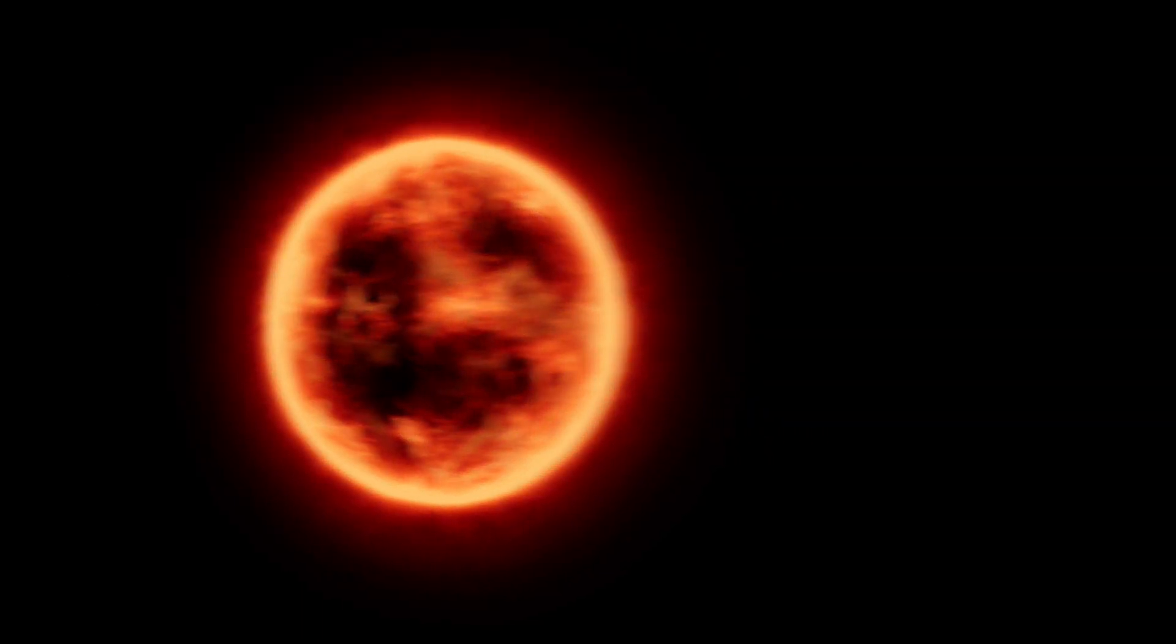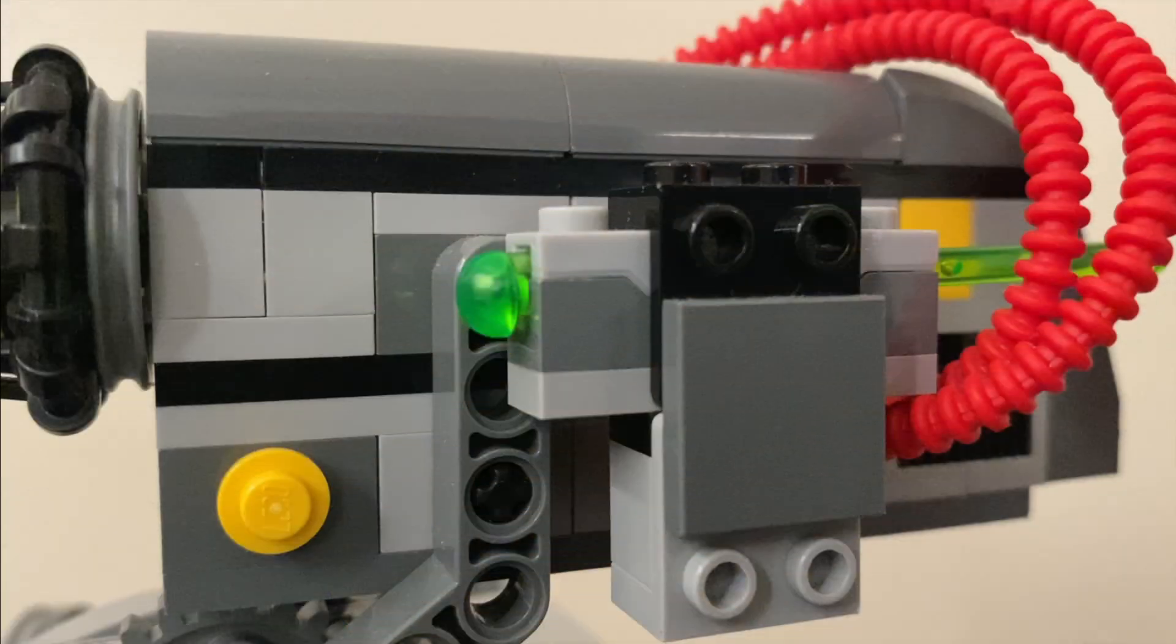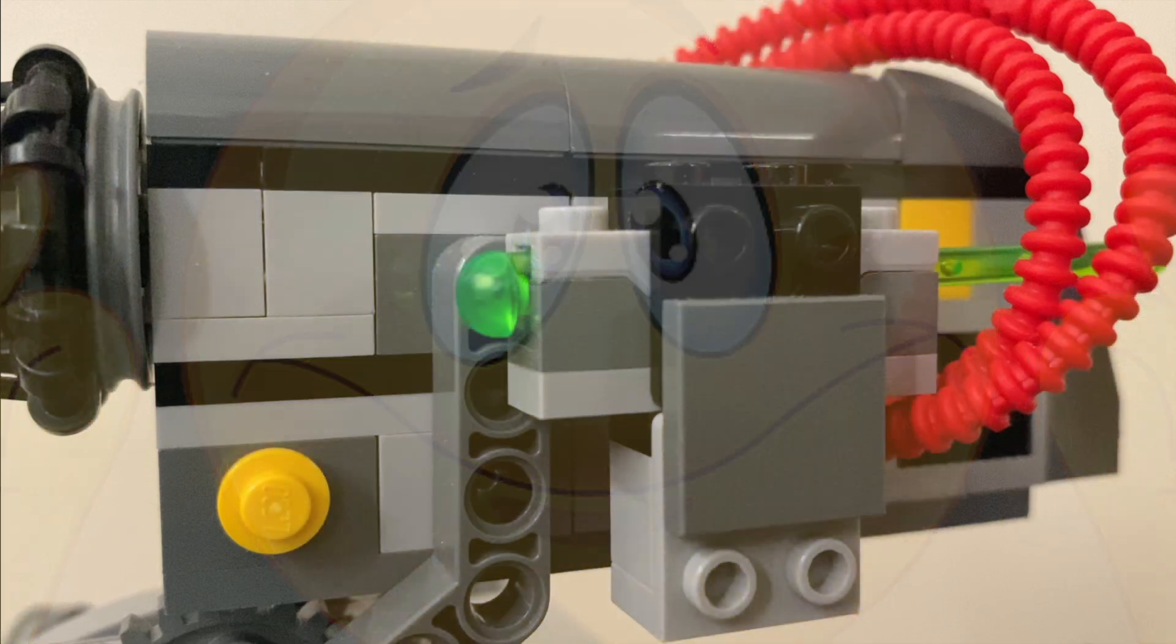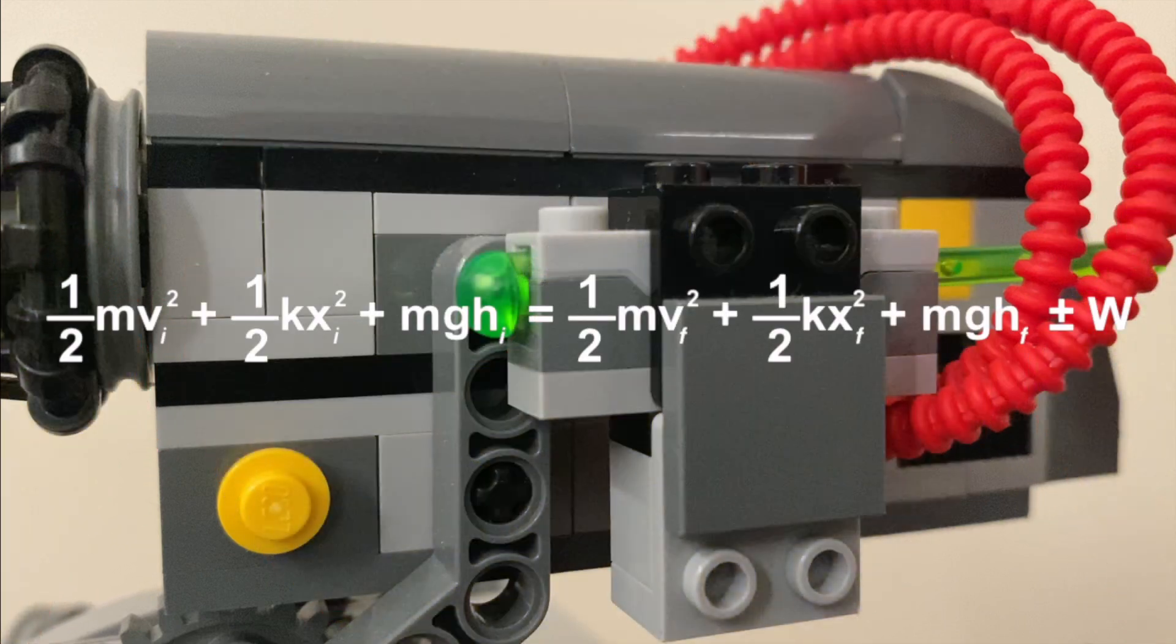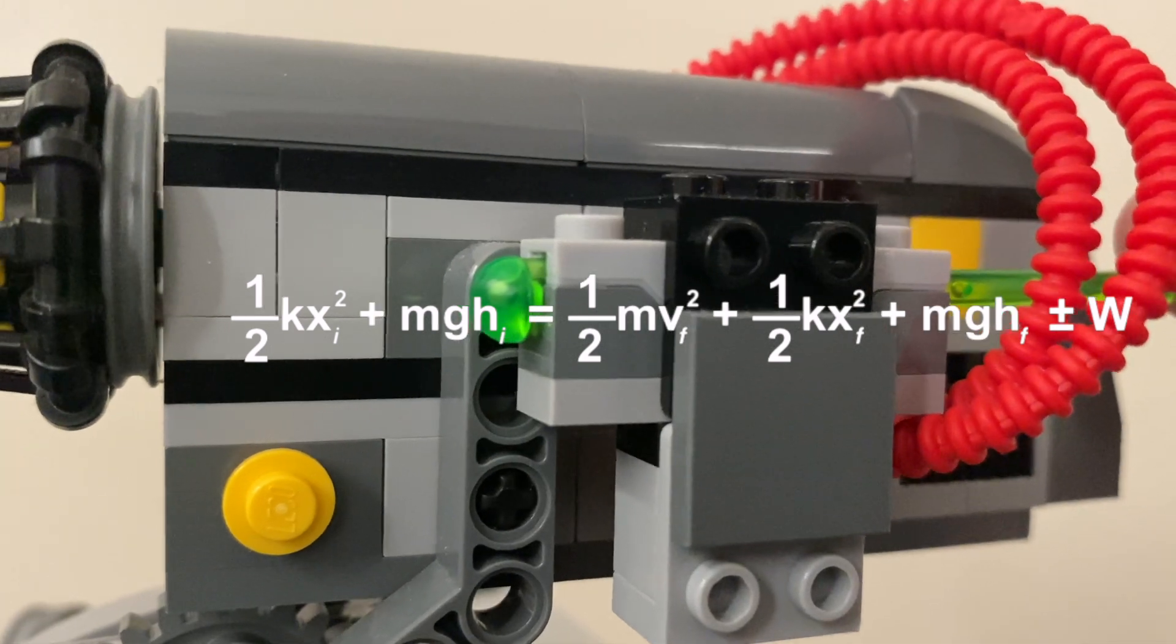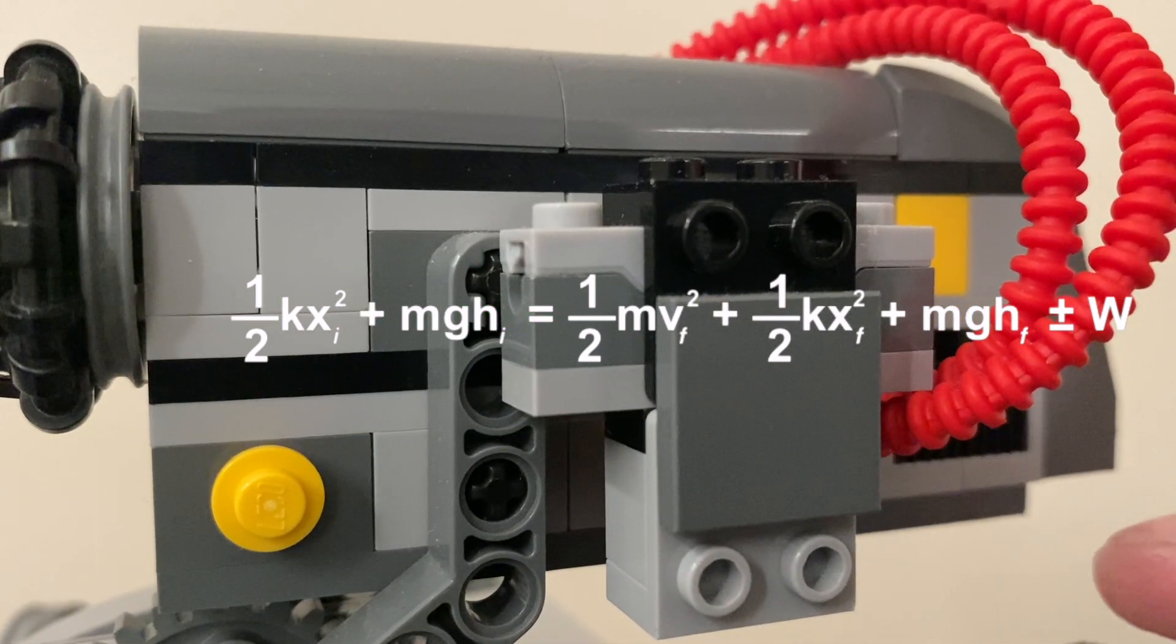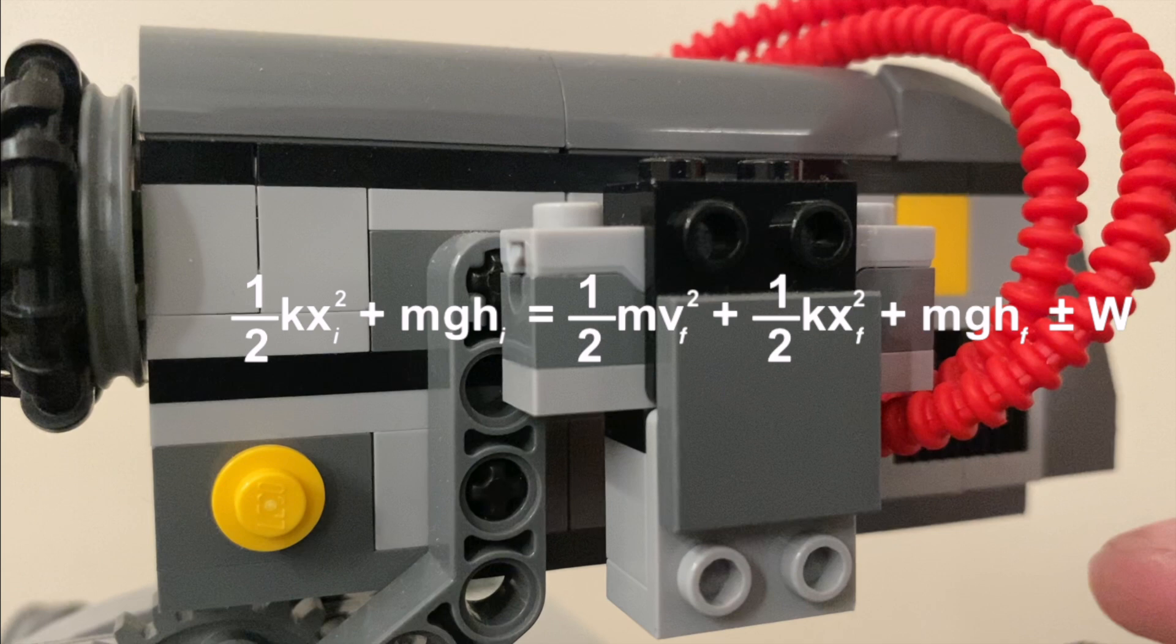The first step is to start making some observations about the way that a spring-loaded shooter works. The very first thing that I would notice is that before you launch it, it isn't even moving. Since its initial velocity is zero and zero times anything is zero, we can just remove this entire thing right here. The second thing I notice is that, well, once you launch it, it's not even touching the spring anymore, so this whole thing is also zero.